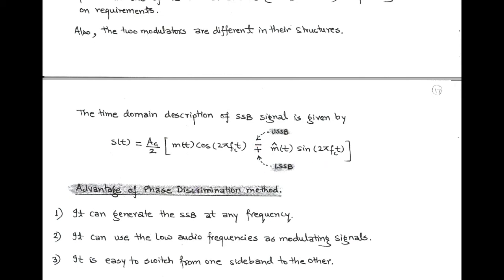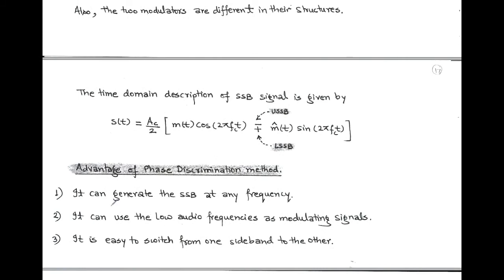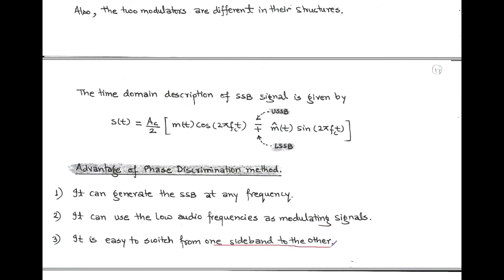There are advantages of using the phase discrimination method. First, it can generate SSB at any frequency. Second, it can use low audio frequencies as the modulating signal or message signal. Third, it is easy to switch from one sideband to another — that is, from upper single sideband to lower single sideband.